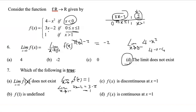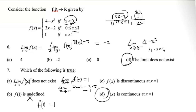f of 1 is undefined — that's not correct, because x equals 1 falls in the interval, so we can work it out. f of 1 equals 3 times 1 minus 2, which is 1. So f of 1 is 1, the limit exists and equals 1. Because the limit exists, equals 1, and f of 1 is also 1, the function is continuous. So the answer is D.